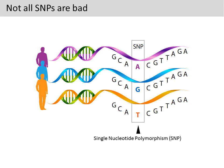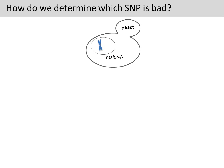Sometimes a SNP does not change protein sequence. In cases where the protein sequence is changed, it is still possible that the change occurs in a less important region of the gene and the protein function is not disturbed by the SNP. So how do we determine which SNP is bad for you? Scientists have developed a functional assay for MSH2. We will go over the details of this assay in another lecture.